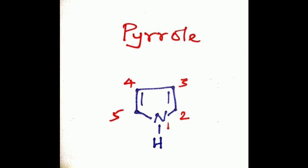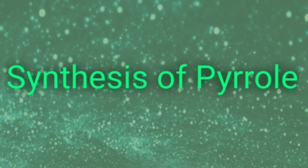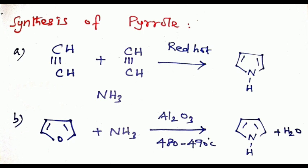Now we discuss the synthesis of pyrrole. In the first method, by passing acetylene gas and ammonia through a red hot tube, we get pyrrole. In the second method, by passing a mixture of furan and ammonia with steam at 480 to 490 degrees Celsius over hot alumina (Al2O3) to form pyrrole.